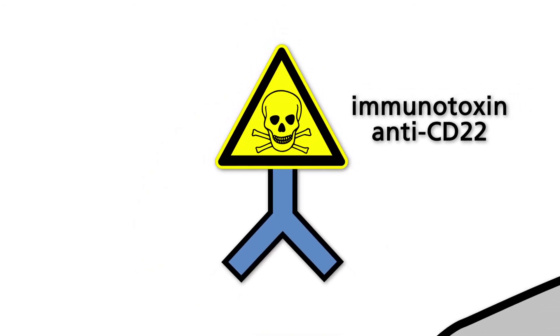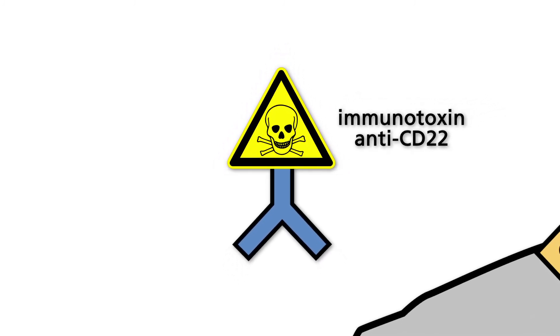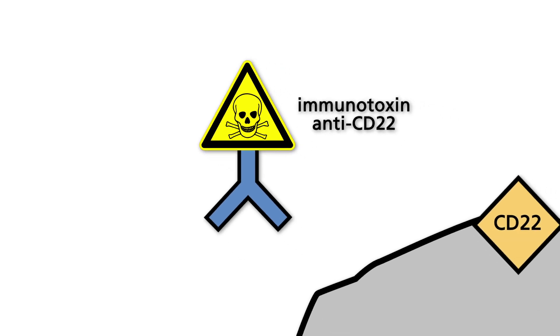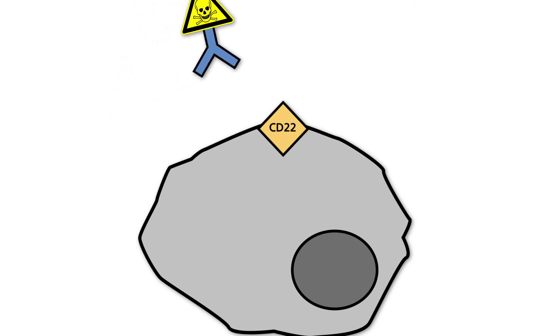Another example of a functional antibody is the immunotoxin anti-CD22. This antibody is coupled to a toxic bacterial peptide called pseudomonas exotoxin. Anti-CD22 binds to the antigen CD22, which is present on the surface of normal B-cells and B-cell tumors.